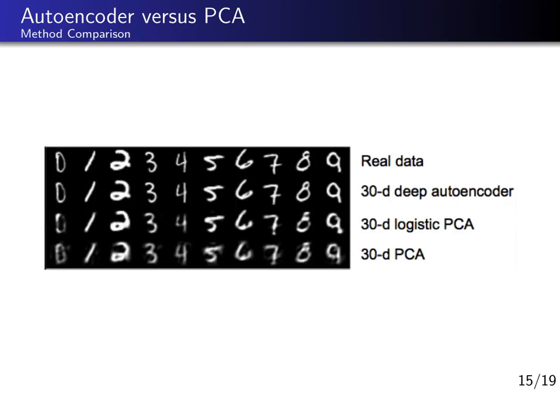Here you see a comparison between nonlinear neural network autoencoders and PCA on the MNIST dataset. On top is the real data; in the second row is a 30-dimensional deep autoencoder, followed by different versions of PCA with the same number of dimensions. The autoencoder does much better with the same number of dimensions than PCA, simply because we don't have the restriction of using a linear transformation — we can use more powerful functions to capture curvature and nonlinear structure in the data.